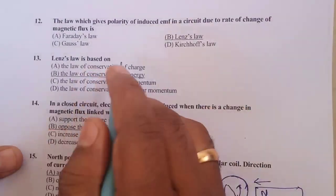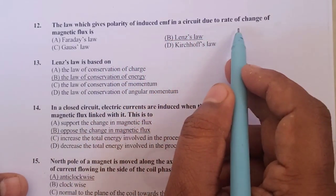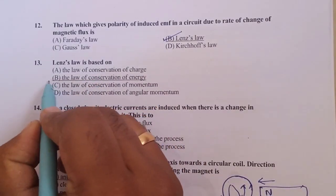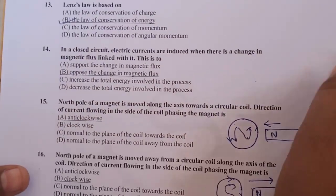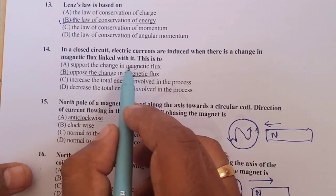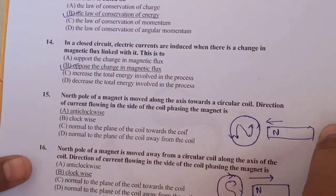Question number 12, the law which gives the polarity of induced EMF in a circuit with the rate of change of magnetic flux is Lenz's law. Lenz's law is based on the law of conservation of energy. In a closed circuit, electric currents are induced when there is a change in magnetic flux linked with, to oppose the change in magnetic flux.